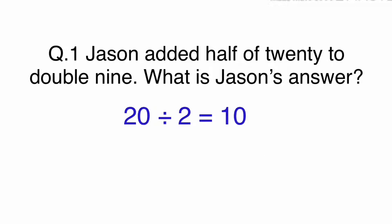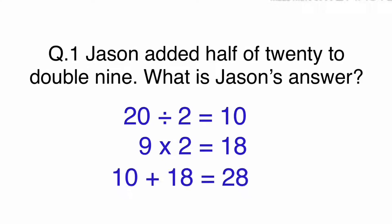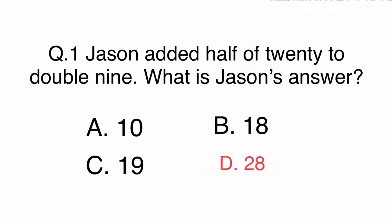Half of 20 is 20 divided by 2, which is 10. And double 9 means 9 times 2, which equals 18. Simply add 10 and 18 together to get 28, which is the answer. The answer is D. 28.